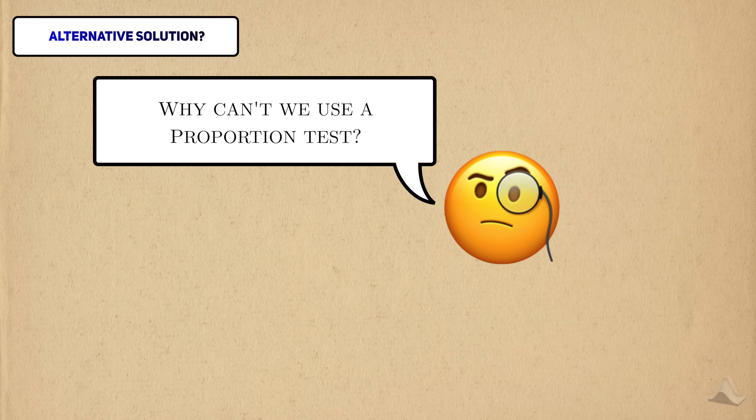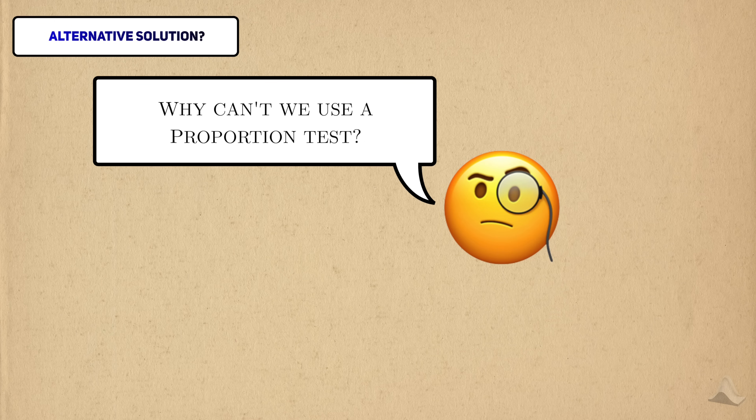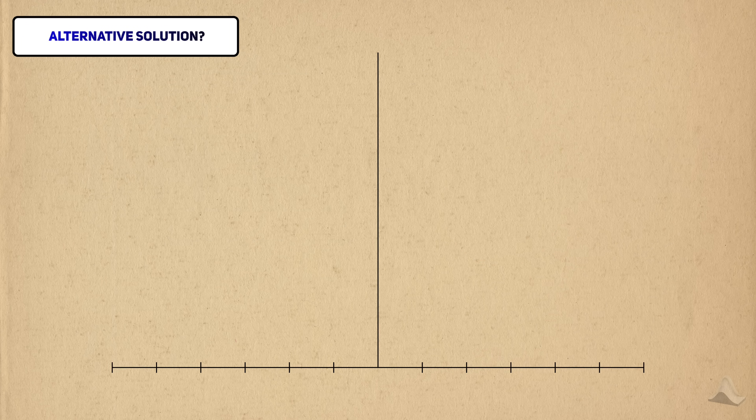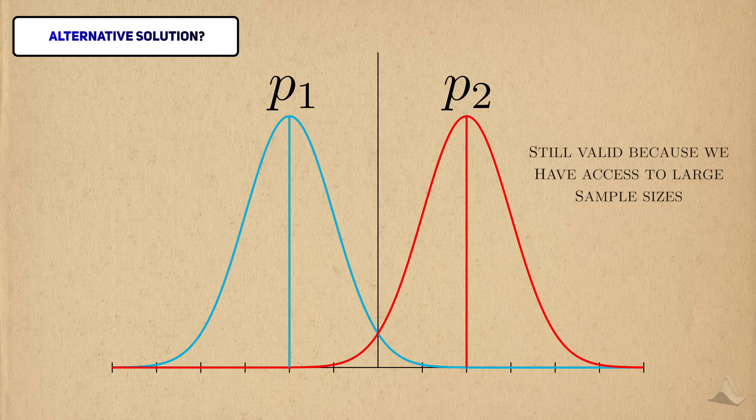Some of you may have thought of using a two-sample proportion test to approach the problem, and that would definitely be a valid approach. The two-sample proportion test is an application of the central limit theorem to categorical data, and it would be valid because we can assume a large sample size.